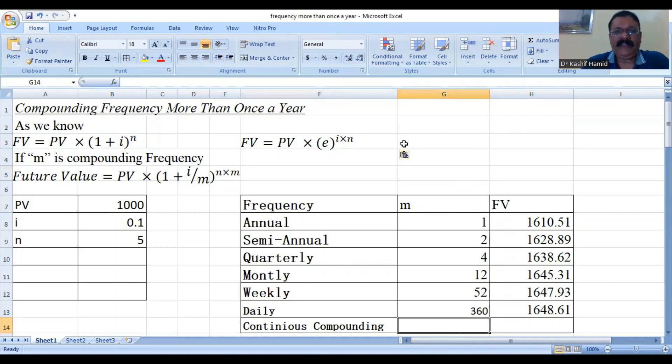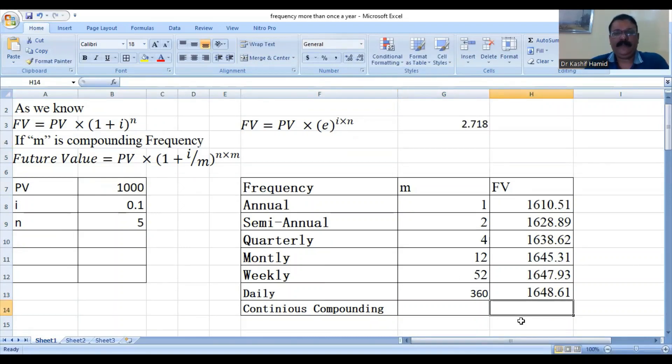Whereas E value is equal to 2.718. So, we will compute here is equal to 1000 multiplied 2.718.